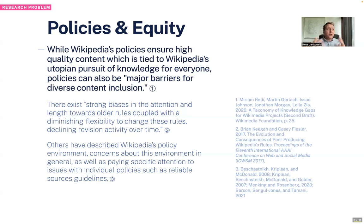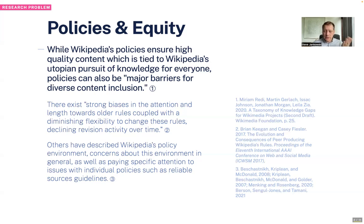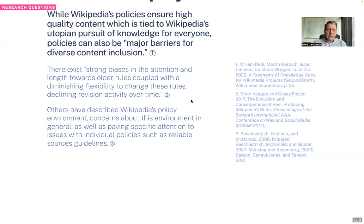So if the goal is to increase knowledge equity by addressing some issues with policies, we need to know what people would like to change in Wikipedia in order to increase equity, but also how to do it. So this research that I'm working on with my team is really about how to think about making changes to Wikipedia policy.